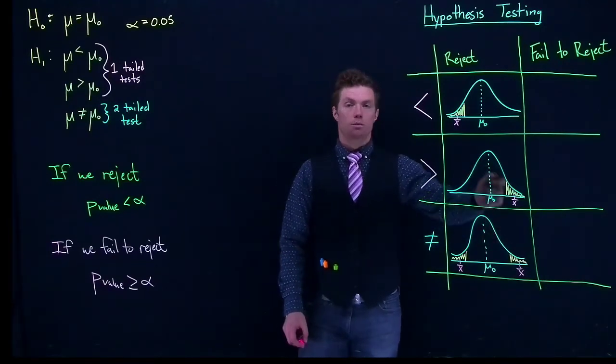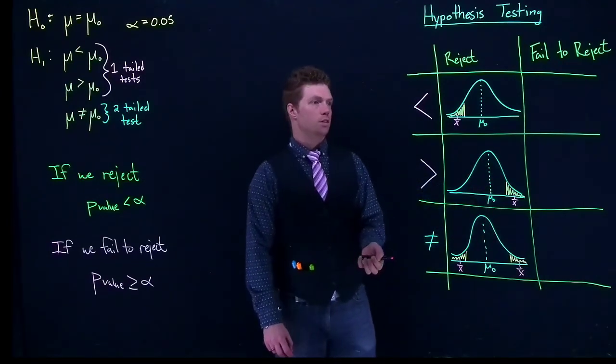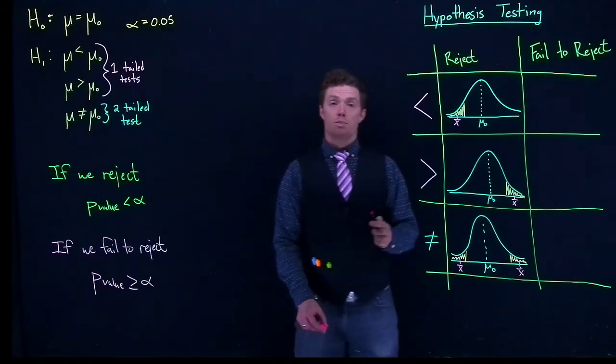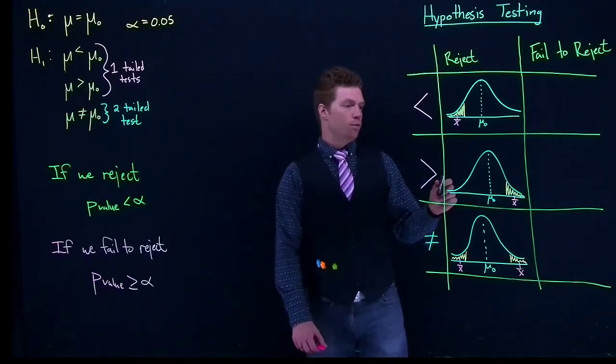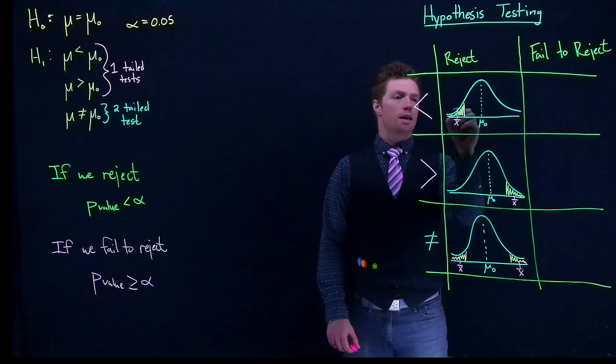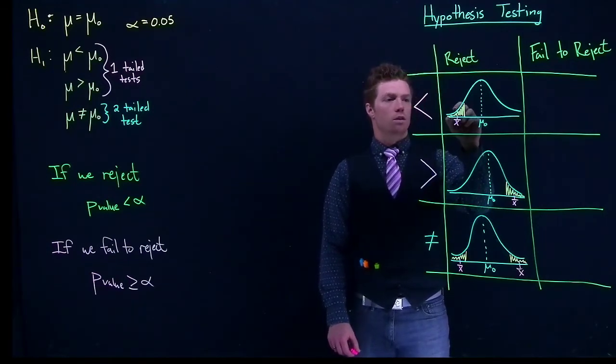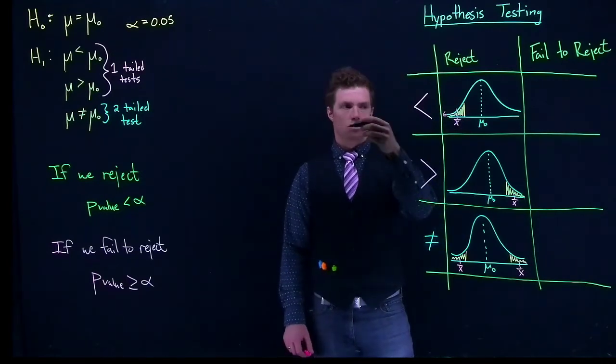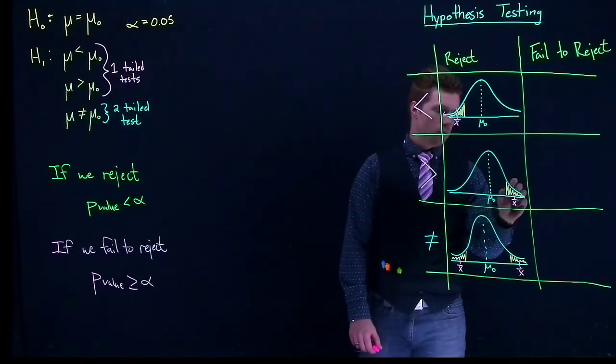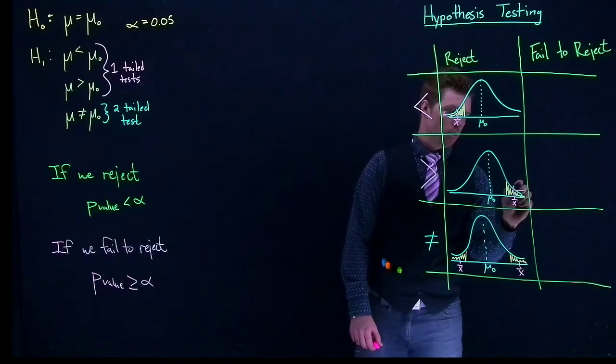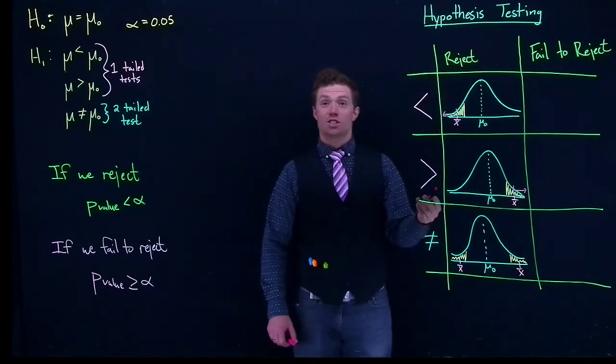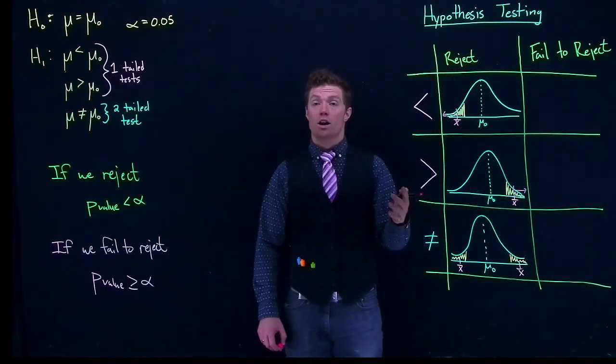So those are the possible ways that we can reject the null hypothesis. And we get our p-value if we basically take the area under the curve from where our x-bar is, and more extreme. It's just the area under the curve from where our x-bar is.